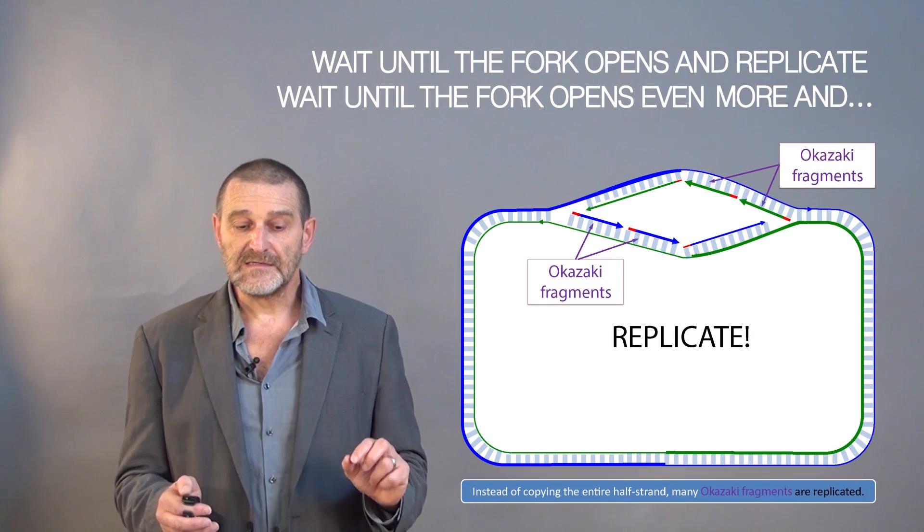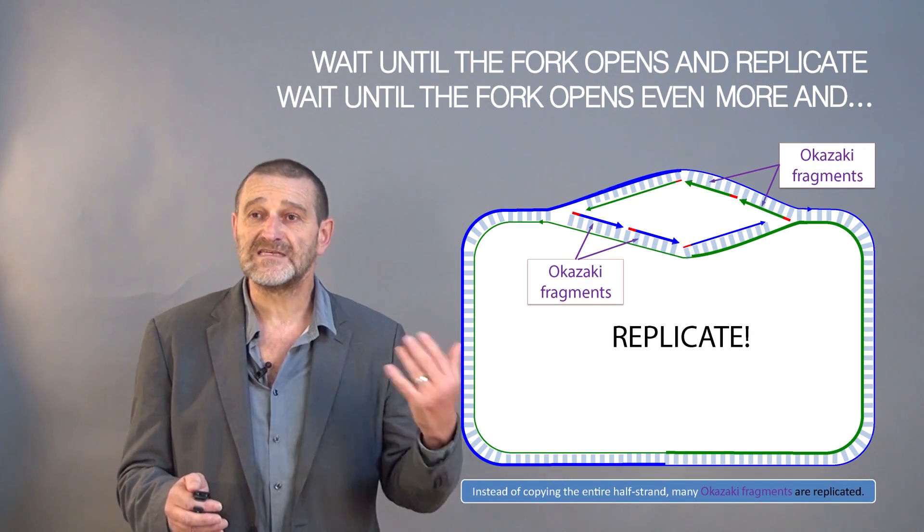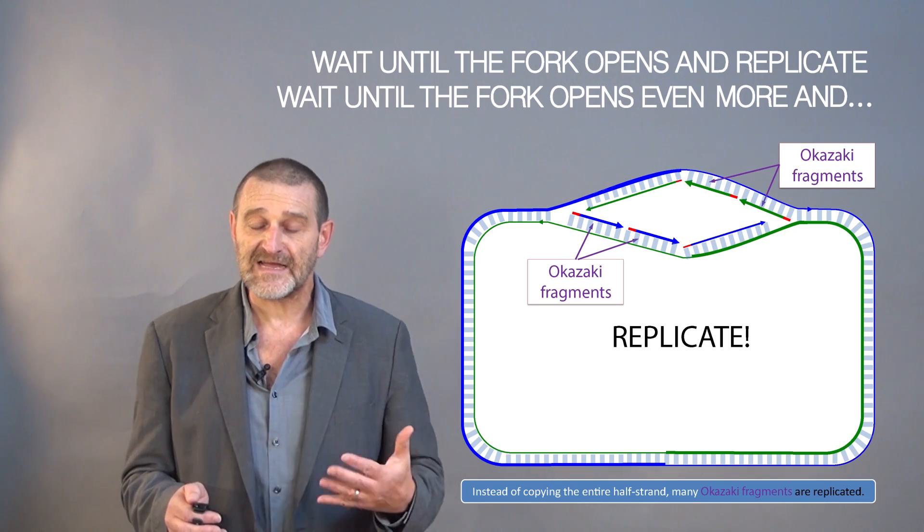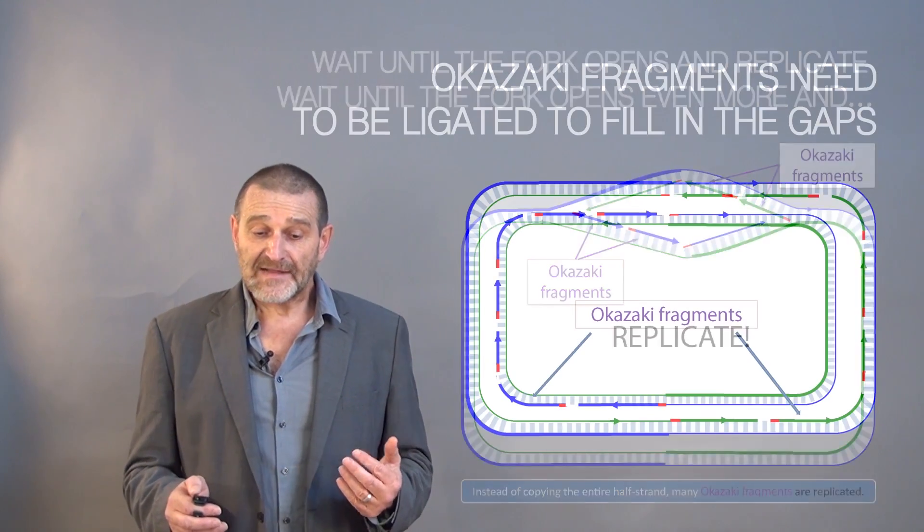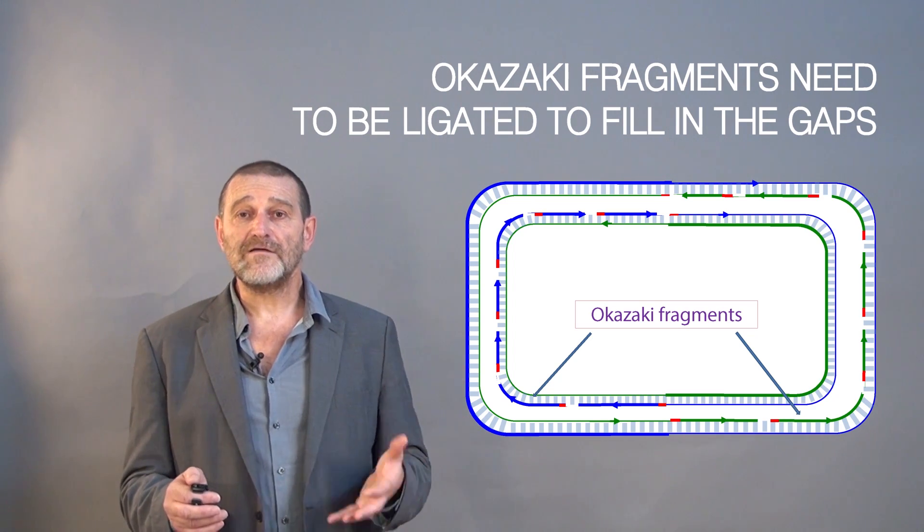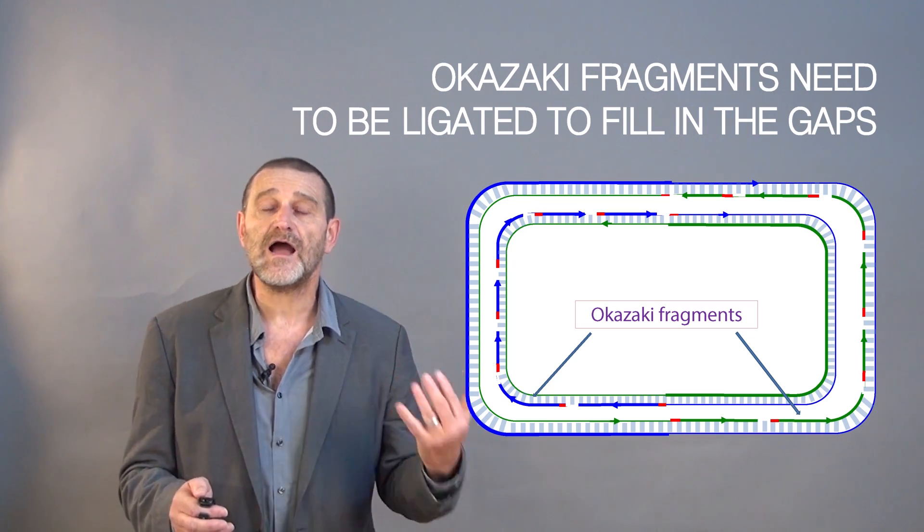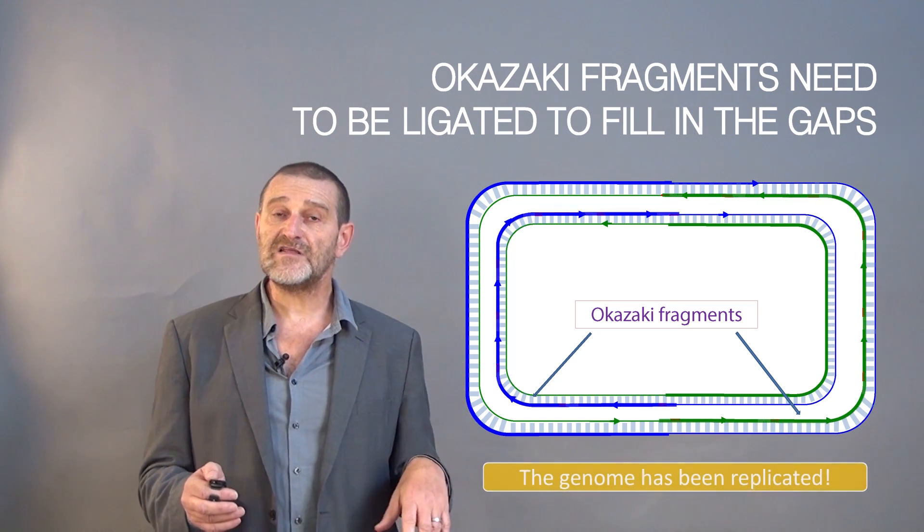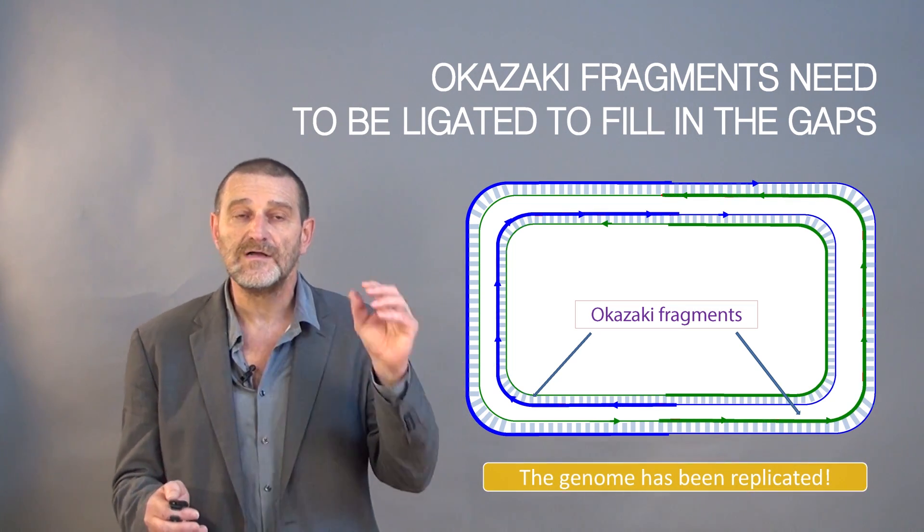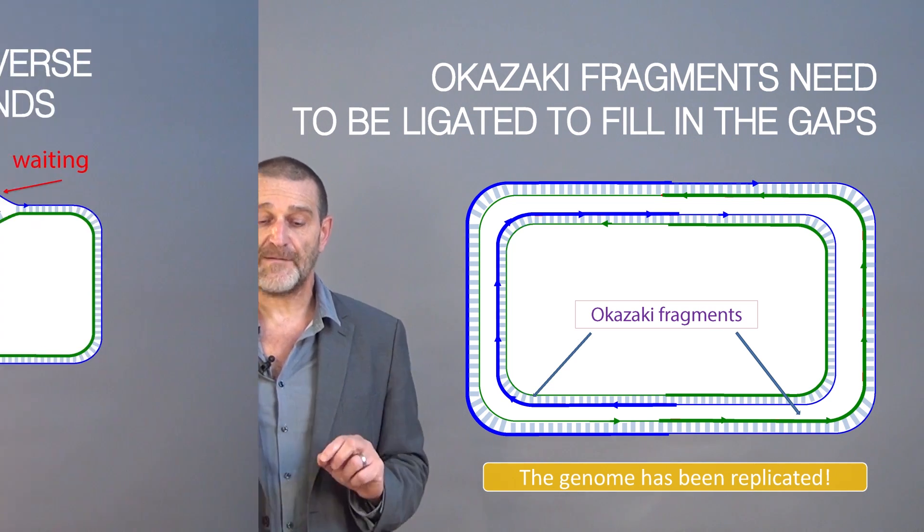You can see that the resulting fragments, these many fragments that are being built called Okazaki fragments, complicate our life a little bit. But in the end, after this process is over, we will have the genome copied in many little fragments. The only thing we need afterwards is just to repair the gaps between different Okazaki fragments and to replicate the genome.